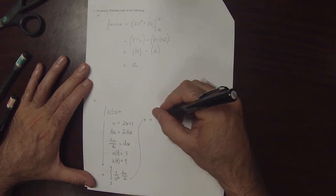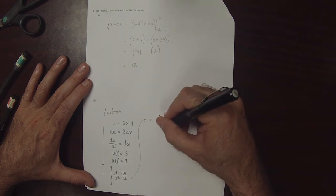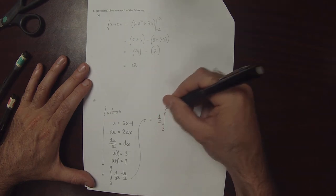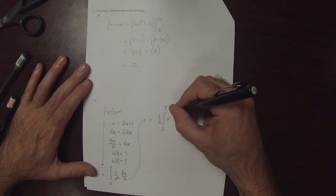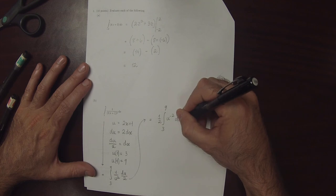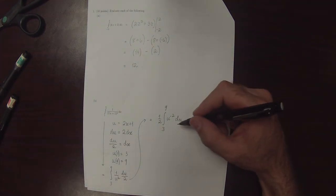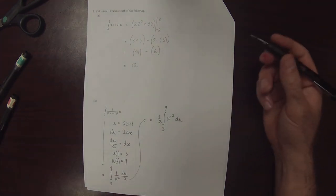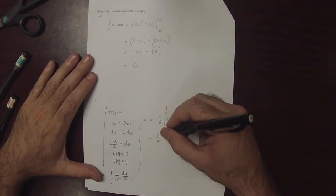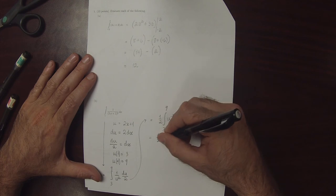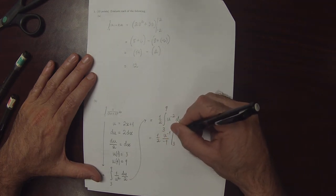Simplifying a little bit, that will be one half times the integral from 3 to 9 of u to the negative 2 du. Now we can use the power rule, so this would be one half times u to the negative 1 divided by negative 1, evaluated from 3 to 9.